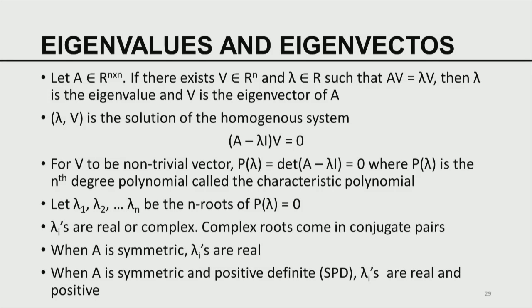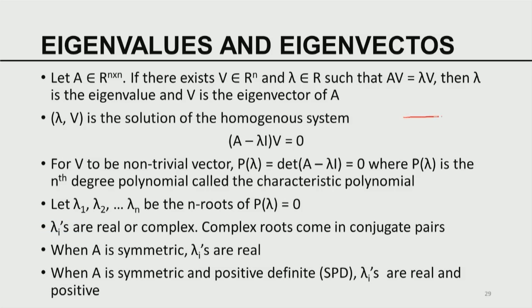For a general matrix, the eigenvalues lie anywhere in the complex plane — this is the real axis, this is the imaginary axis. For a general matrix, an eigenvalue can be anywhere; if complex, it occurs in conjugate pairs; it could be real, positive, or otherwise. For symmetric matrices, the eigenvalues are always real. For symmetric positive definite matrices, the eigenvalues are always real and positive.